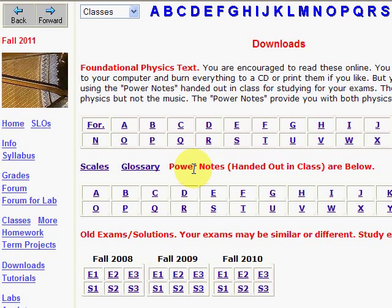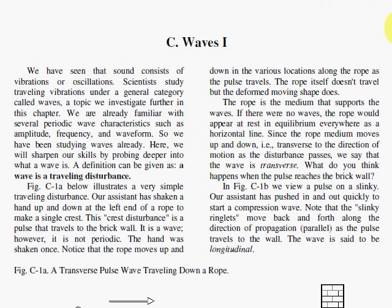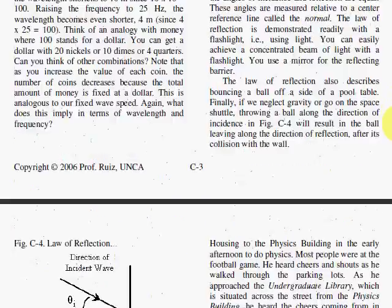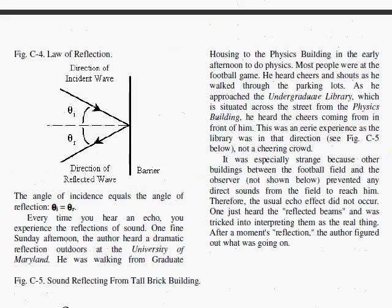Doc here reviewing for exam one by request. We have a student requesting the big four properties of waves, which are covered in chapter C. The first is reflection. The law of reflection: reflection means that sound waves, light waves, water waves — any kind of wave — will bounce off barriers.